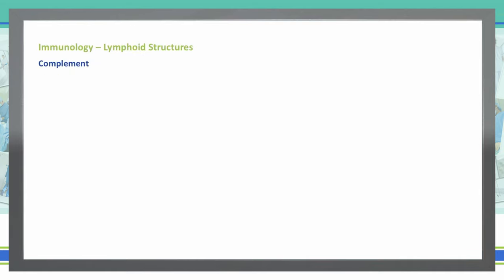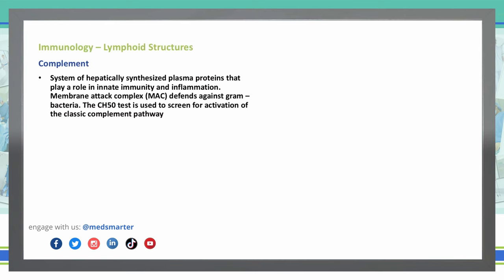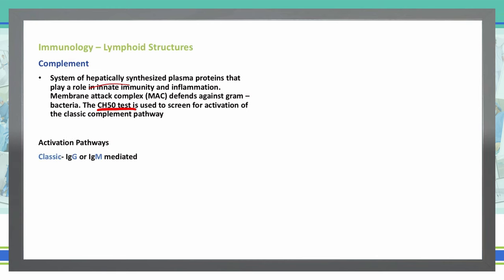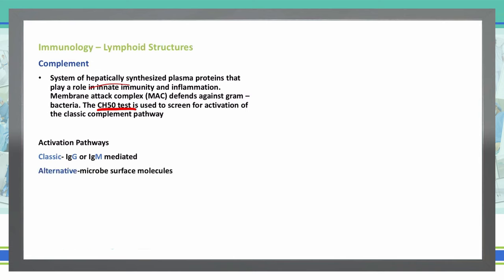Let's talk about complement. Complement is a system of hepatically synthesized plasma proteins — they come from the liver — and they play a role in innate immunity and inflammation. We have membrane attack complexes (MACs) that defend against gram-negative bacteria, and we can use the CH50 test to screen for activation of the classic complement pathway. There are three different activation pathways: the classic IgG or IgM-mediated pathway, the alternative or microbe surface molecule pathway, and the lectin pathway, which involves mannose or other sugars on the microbe.